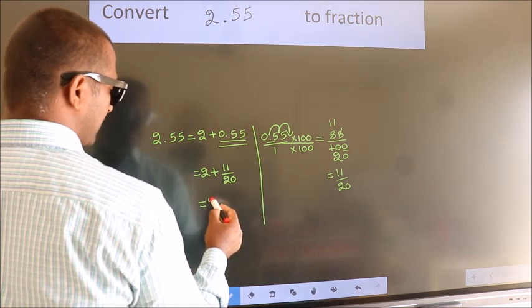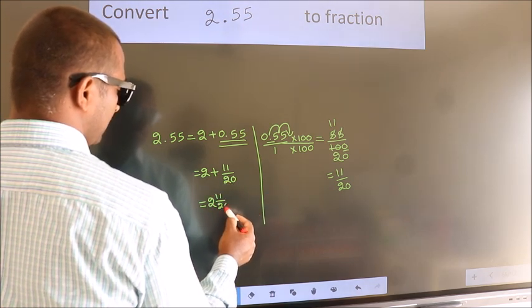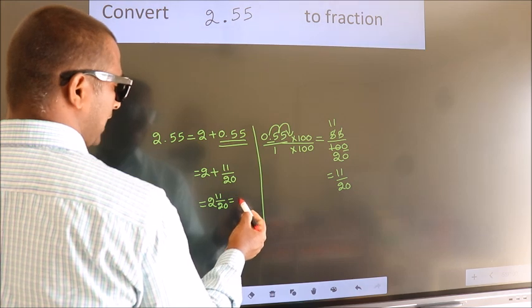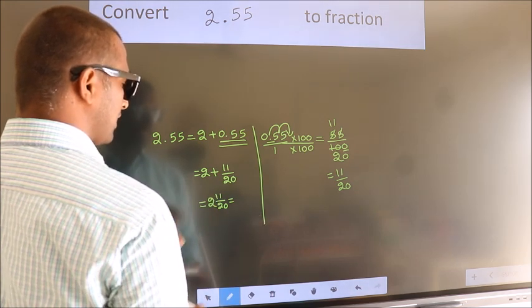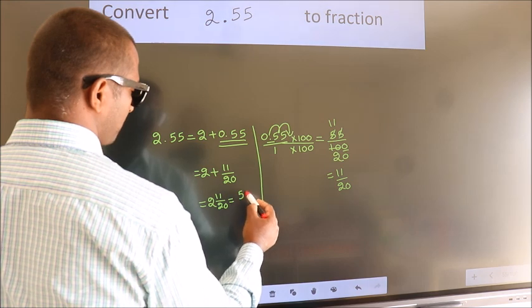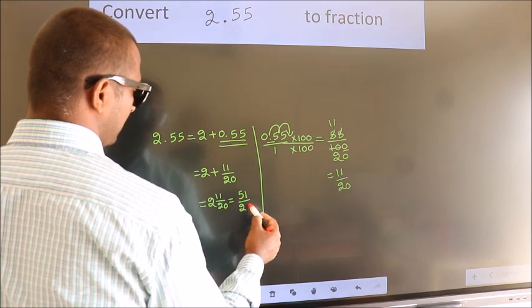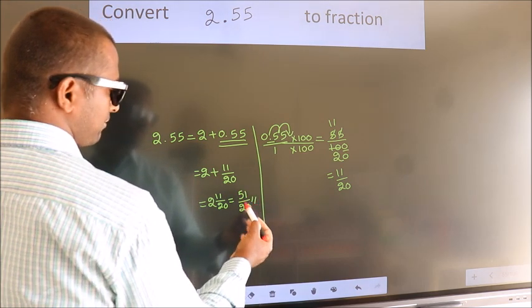In mixed fraction it is 2 11 over 20. In improper fraction it is 2 into 20, 40 plus 11, 51 by 20 is our fraction.